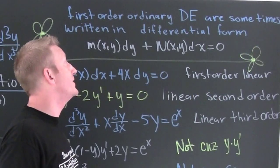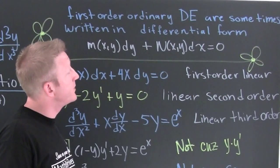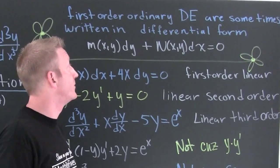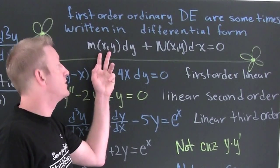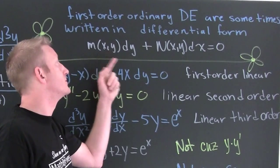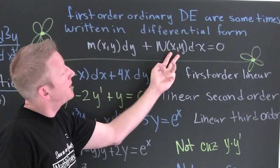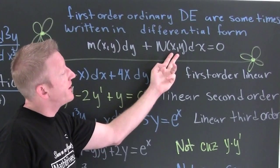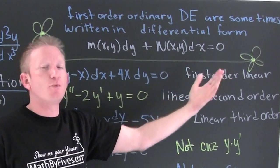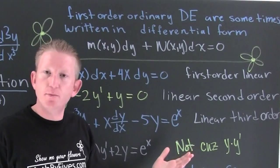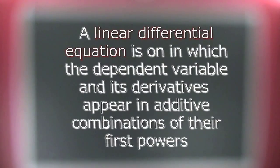First-order ordinary differential equations are sometimes written in differential form, where we have a function of both variables times dy plus another function of two variables times dx. We can write this in a more normal form.